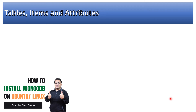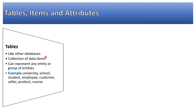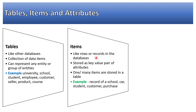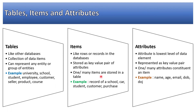Now, tables, items, and attributes — how are these represented in DynamoDB? A table in DynamoDB is like a table in other databases; it is a collection of data items. An individual record is called an item, and it can represent any entity such as a university, school, student, employee, or customer. An item is like a row or record in a traditional DBMS. Items are stored as key-value pairs of attributes, and one or many items are stored in a table.